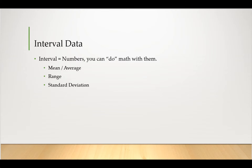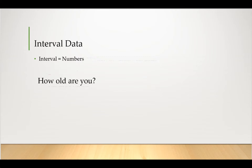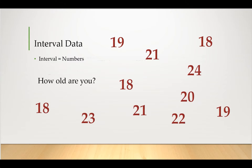And finally, we have interval data, which is when we start working with actual numbers and we say you can "do" math with them, which means we can calculate things like a mean or range or a standard deviation. For example, if we asked a group of people how old are you, you might get different answers, and the ages might range: 18, 20, 21.